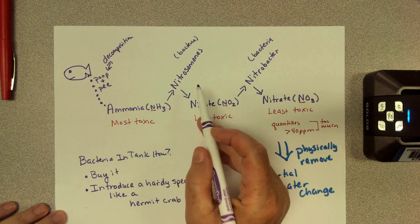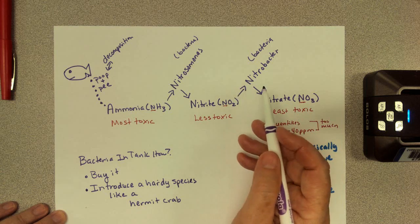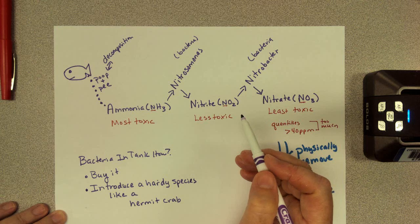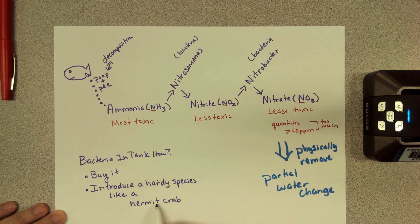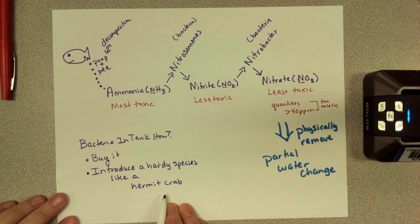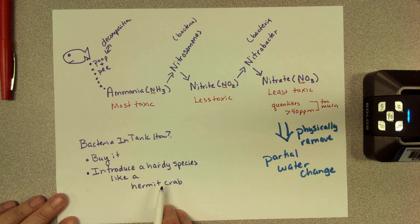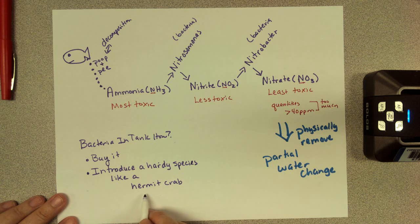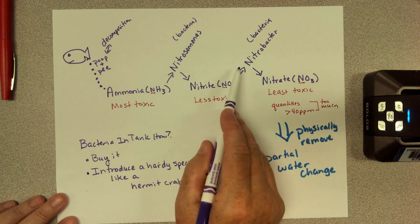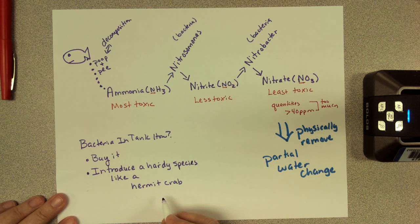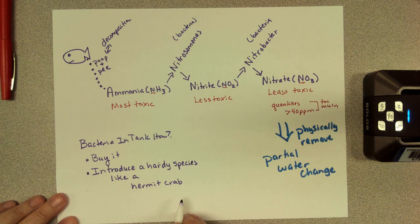But this bacteria, the nitrosomonas and nitrobacter, they like to adhere to surfaces, right? Like all bacteria, like I told you earlier, they like to attach to the gravel. Well, they also like to attach to the hermit crab shell and all of the hermit crab body. So hermit crabs, not only are they hard to kill, but they also have the nitrosomonas and nitrobacter all over their body and all over the inside and outside of their shell. So they're the cheaper, better way to introduce these two bacteria to your tank. And they're actually kind of cute and fun once you get used to them because sometimes they act a little creepy.